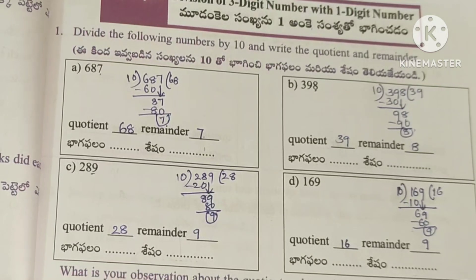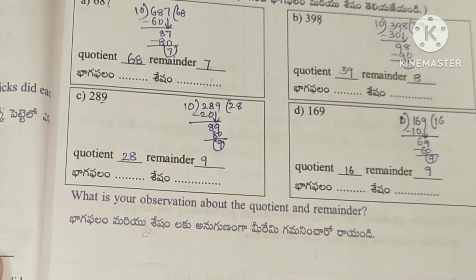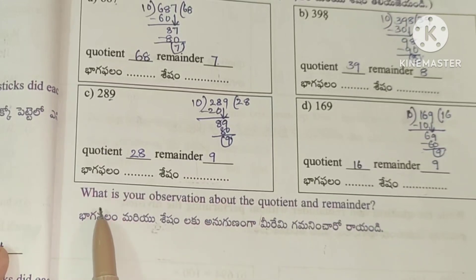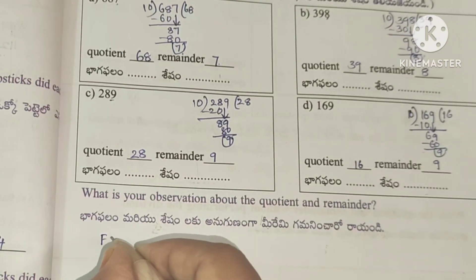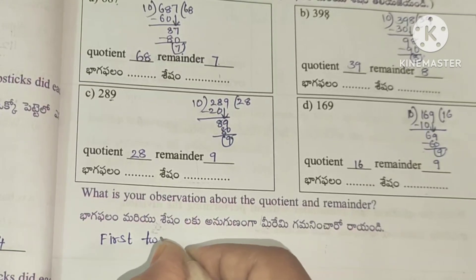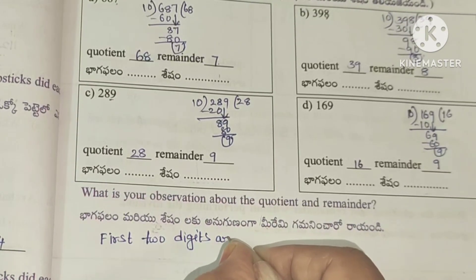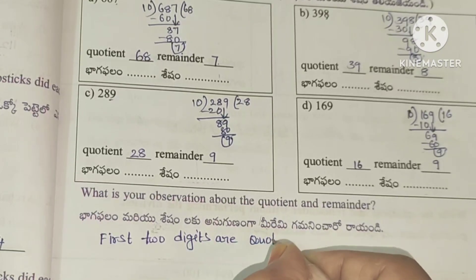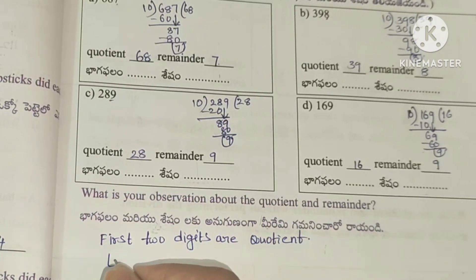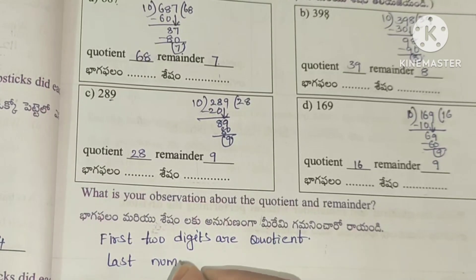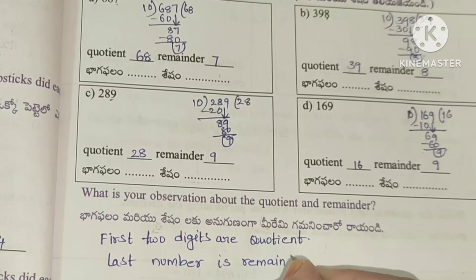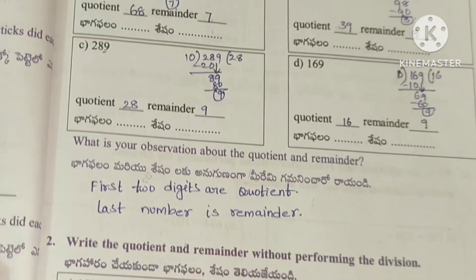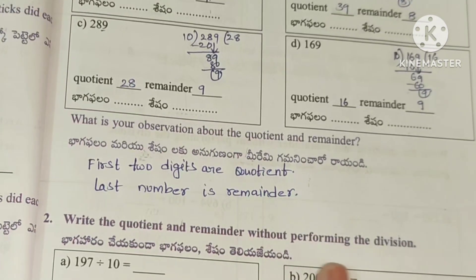We will try the 10th division observation. Second question: what is your observation about the quotient and remainder? The first two digits are the quotient and the last number is the remainder.